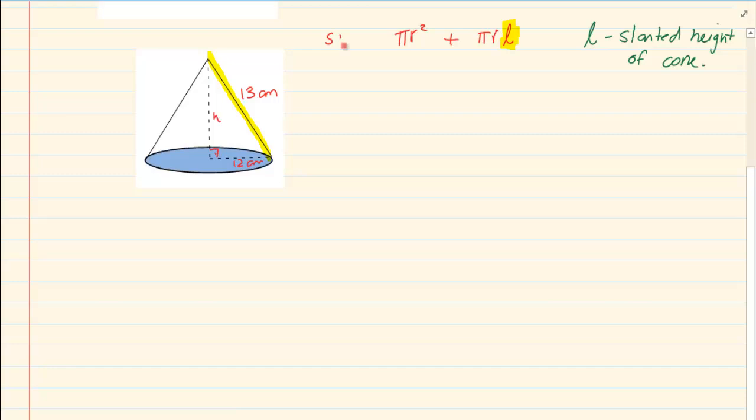So if I want to calculate the surface area it's going to equal to pi and then my r is going to be 12 squared plus pi again 12 and we're going to multiply it by 13 which is the slanted height. So here we have 144 pi plus 12 times 13 which is equal to 156 pi giving us a total of 300 pi centimeters squared because we are working with area.